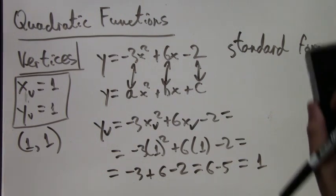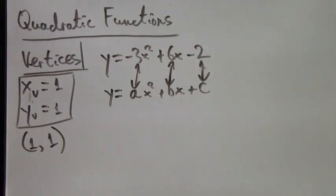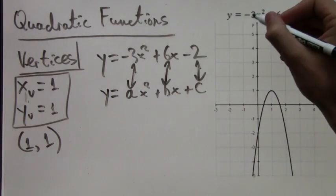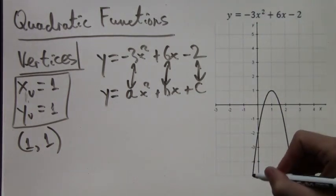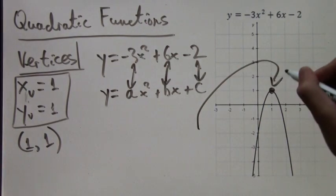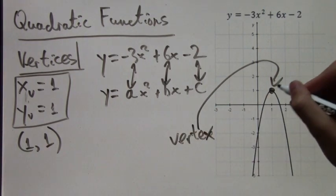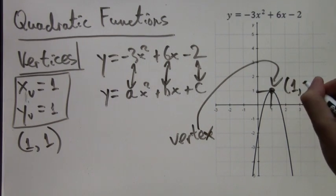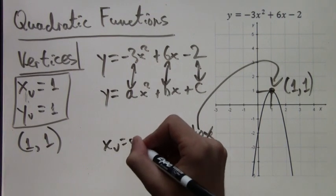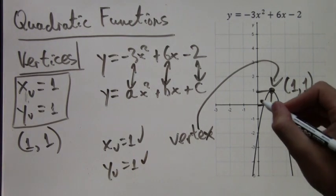So now let's look at the graph of this function that is made by a computer and see if we're right. Here's the graph. And notice the function is right, negative 3x squared plus 6x minus 2. And here's the vertex, where the quadratic function turns around. I've labeled it now. Well, if we look at its coordinates, it is indeed (1, 1). As we calculated before, its x-coordinate is 1 and its y-coordinate is 1. So our answer is correct.